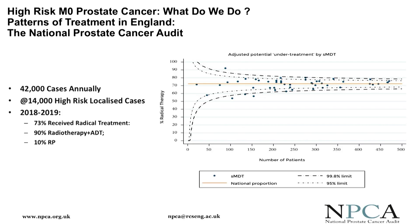This is a population graph giving some indication of how common high-risk M0 disease is. The UK has about 68 million people. This is the national prostate cancer audit data for England and Wales — about 60 to 62 million — from which we get between 42,000 and 52,000 cases annually. The funnel plot on the right represents high-risk localised prostate cancer cases, with each dot representing a major centre in a city in England or Wales.